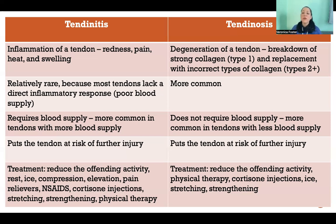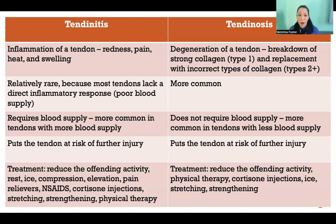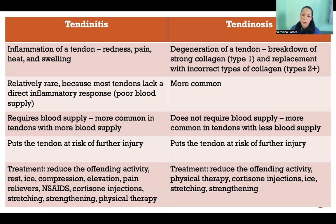Inflammation of anything requires blood supply — blood is what delivers the inflammatory markers and things that stimulate inflammation in the first place. Inflammation is caused by increased blood flow to that structure; that's where the redness, pain, heat, and swelling come from. Tendons in general don't have a great blood supply, so it's actually relatively rare that a tendon becomes truly inflamed.